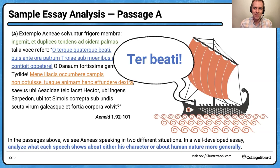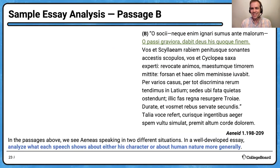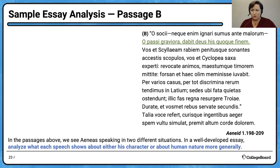Let's do Passage B. In the first passage we get to see Aeneas in a very human, private moment — he's not necessarily speaking to anybody, just nervous, scared, terrified. But here in this second speech, we see Aeneas the leader. He's talking to his men.